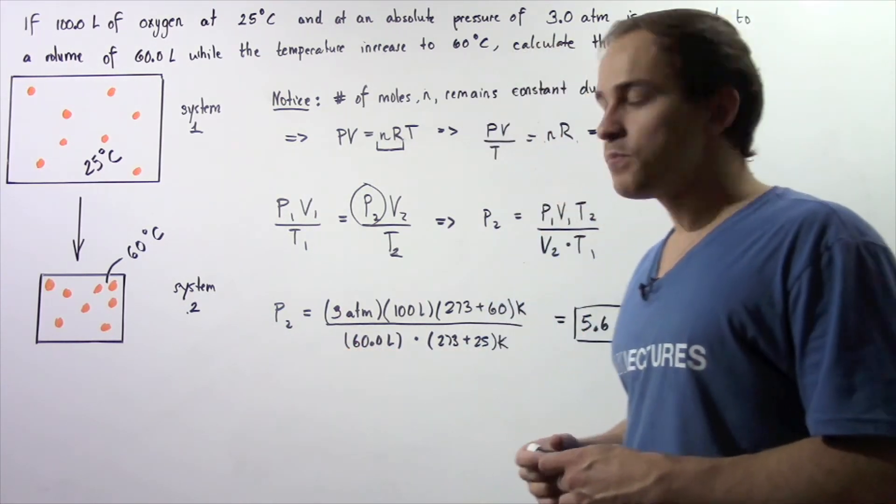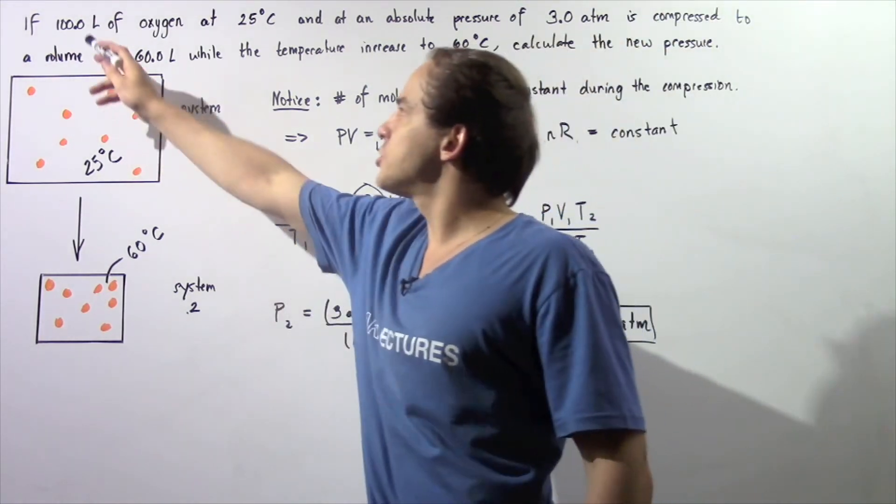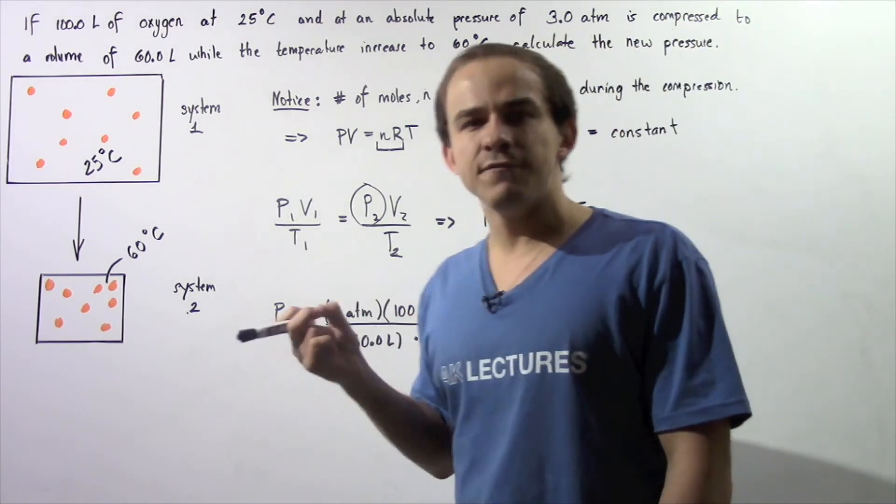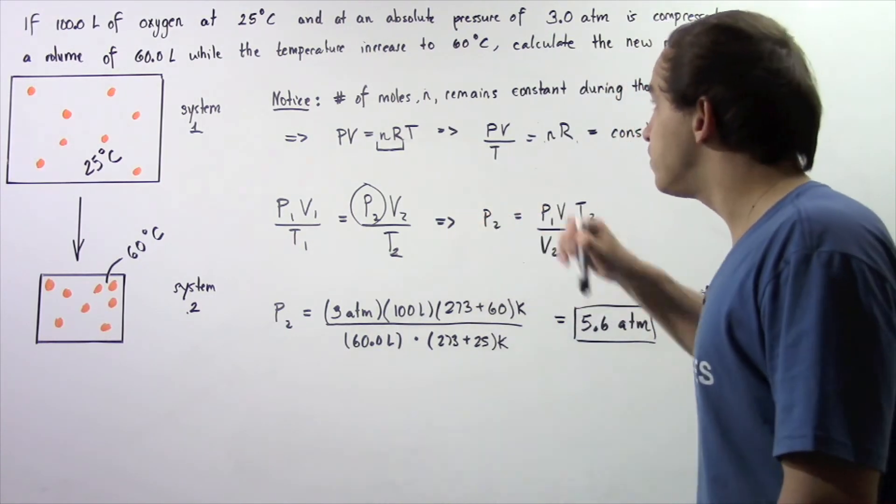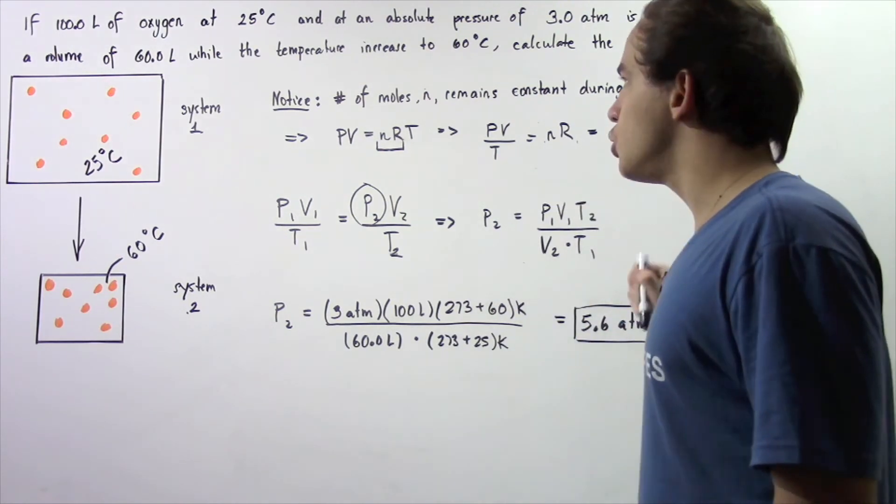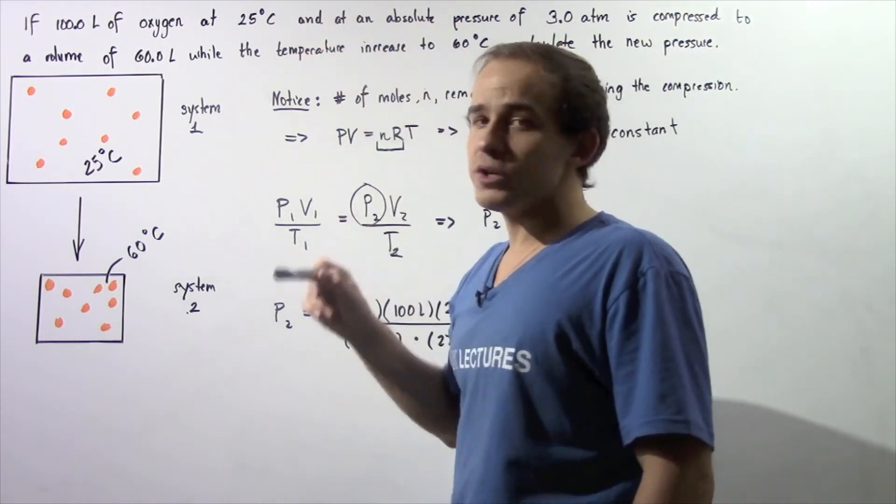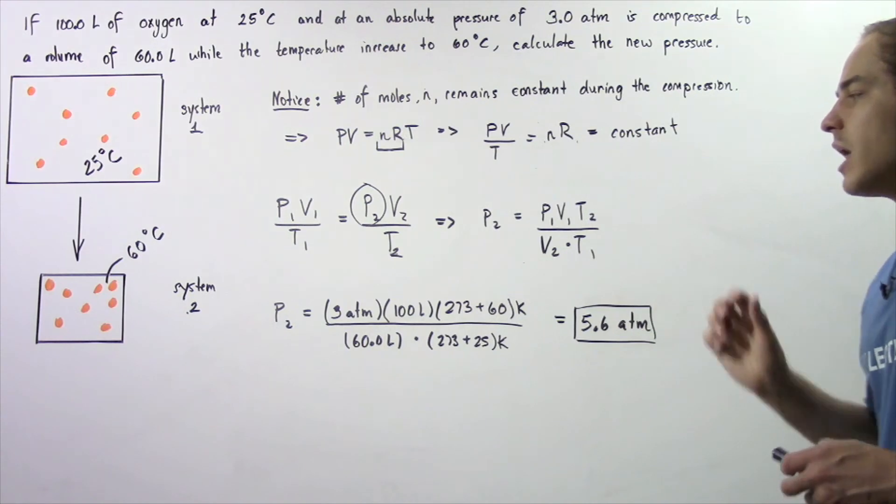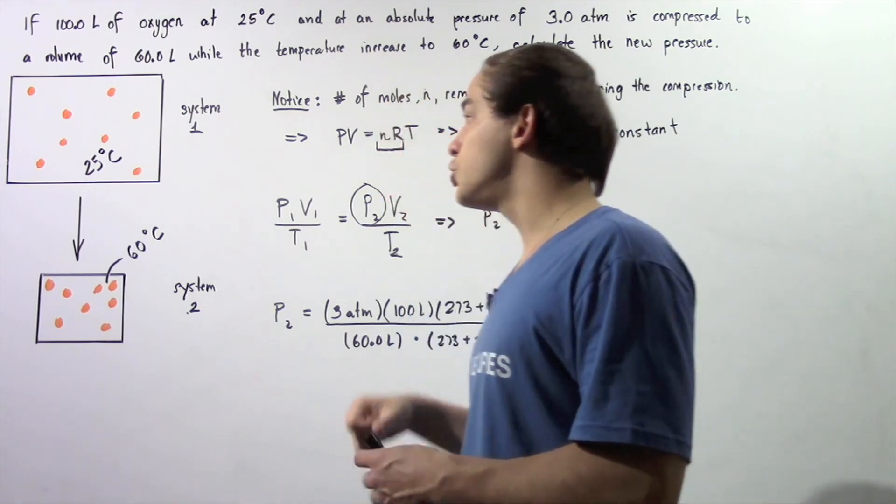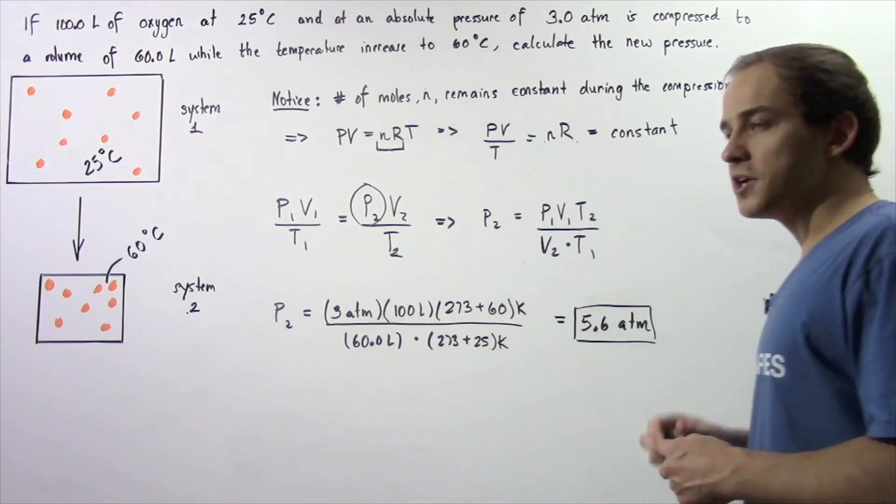So P2 is equal to pressure one which is 3 atm, volume one which is 100 liters, and the temperature of system number two given in Kelvins, so 273 plus 60 gives us the Kelvins. Now we divide that by volume two which is 60 liters multiplied by T1 which is 25 degrees Celsius plus 273. We plug that into our calculator and we get that the new pressure of system number two when our compression takes place is about 5.6 atm. Cheers.